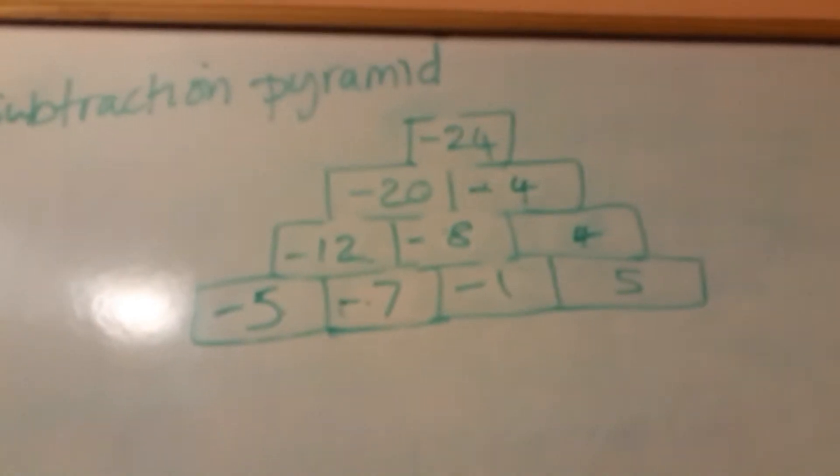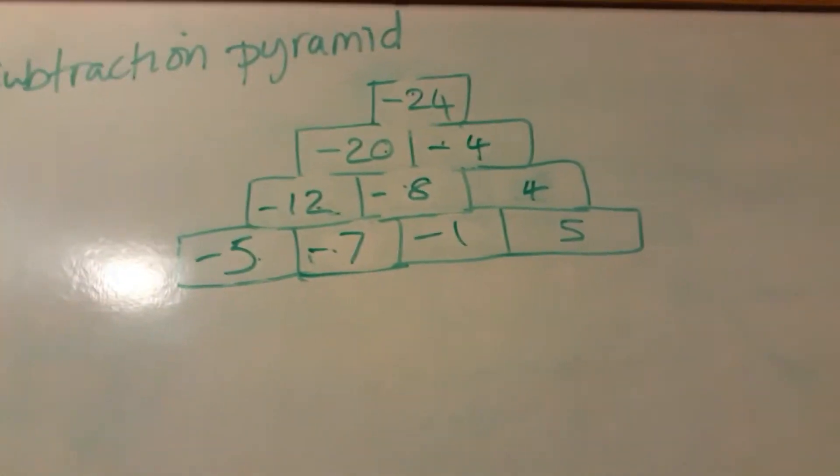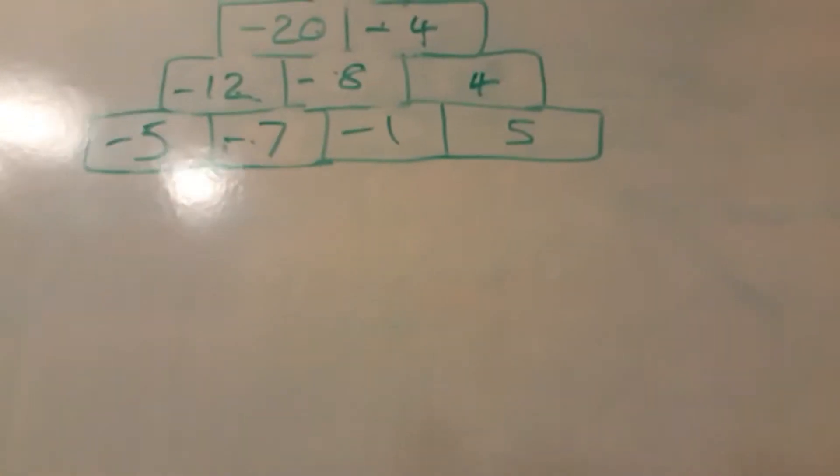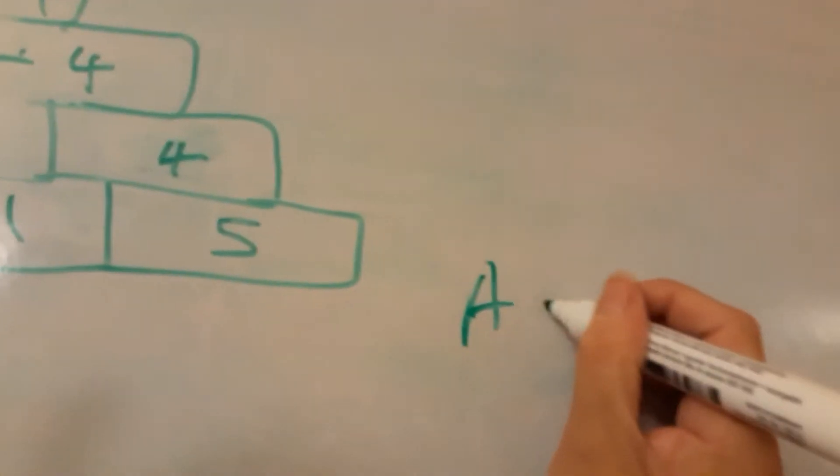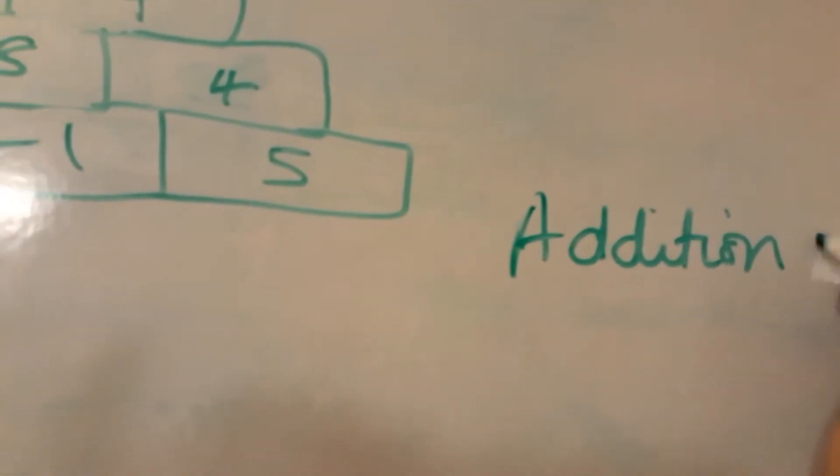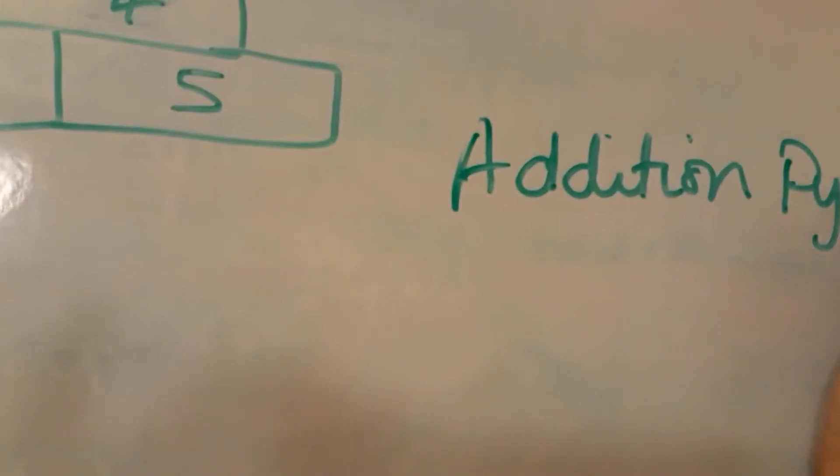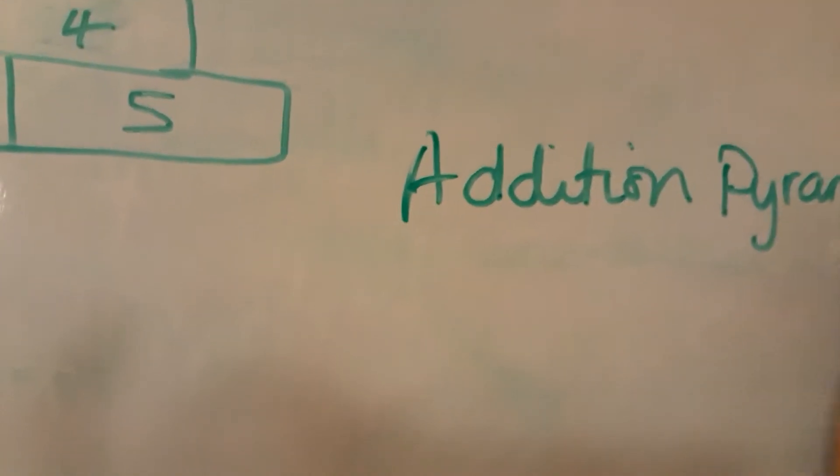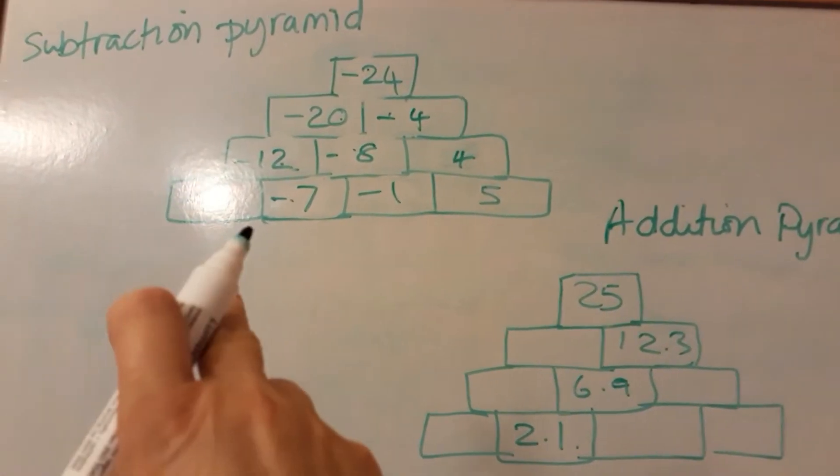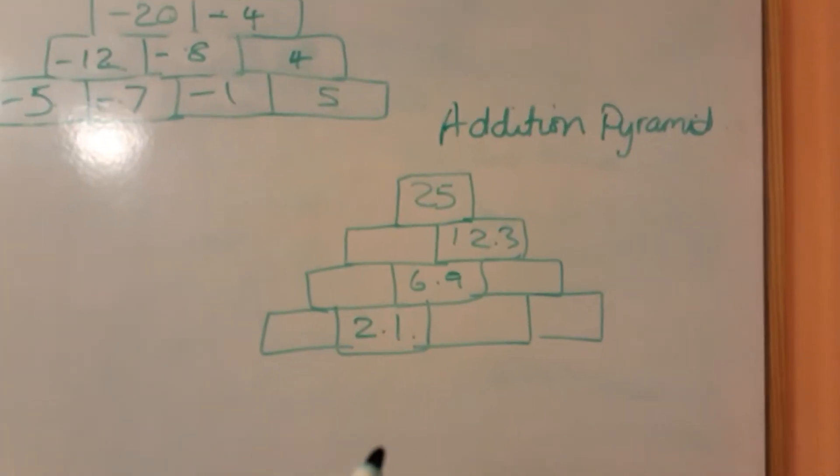So that's a pyramid, a number pyramid, basically a subtraction pyramid. Or we can do an addition pyramid. We'll do an addition one now. Okay, so we did the subtraction one at the top, and now we're going to move on to addition.